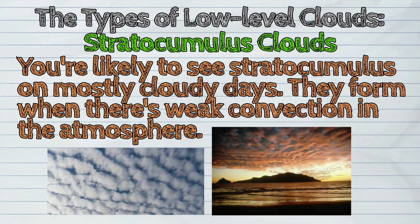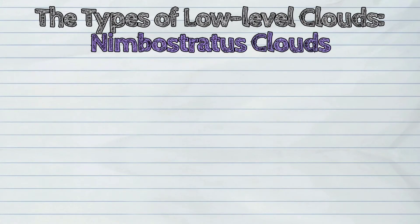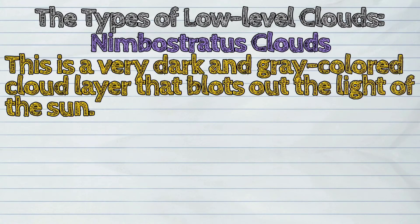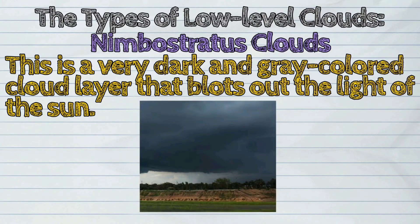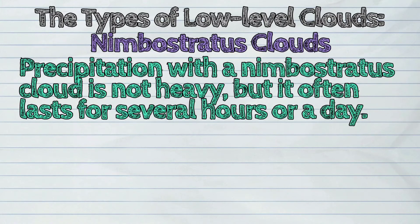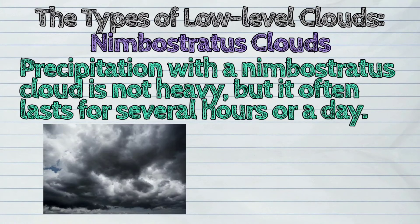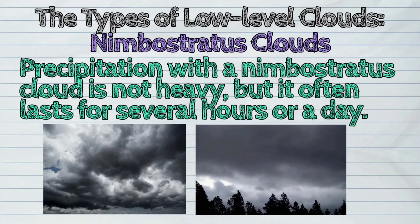The fourth one is the nimbostratus clouds. This is a very dark and gray-colored cloud layer that blots out the light of the sun. Precipitation with a nimbostratus cloud is not heavy, but it often lasts for several hours or a day.